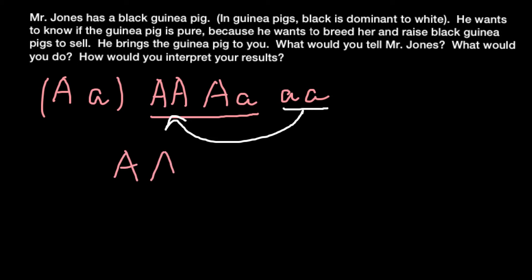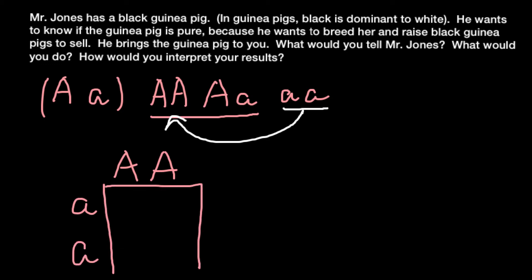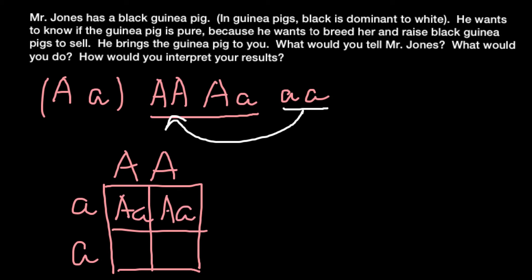The first parent is phenotypically black but with unknown genotype — it could be homozygous or heterozygous. If it is homozygous dominant and we cross it with the homozygous recessive genotype, all of the progeny would be heterozygous. That means 100% of such a cross would result in an F1 generation that is phenotypically black.